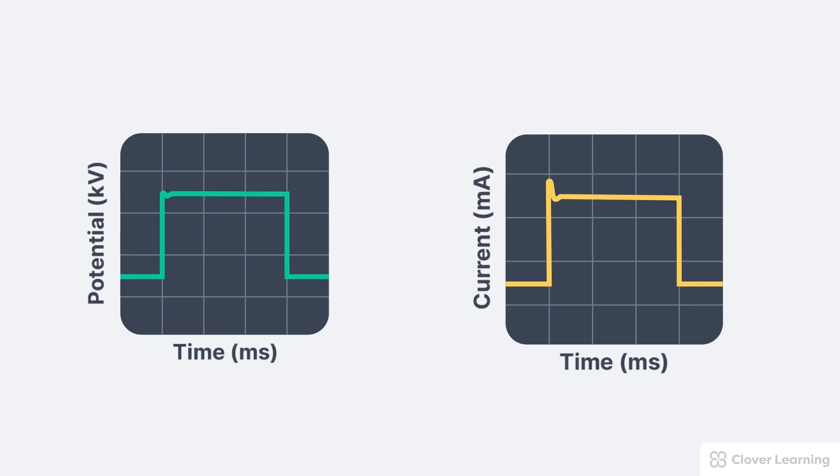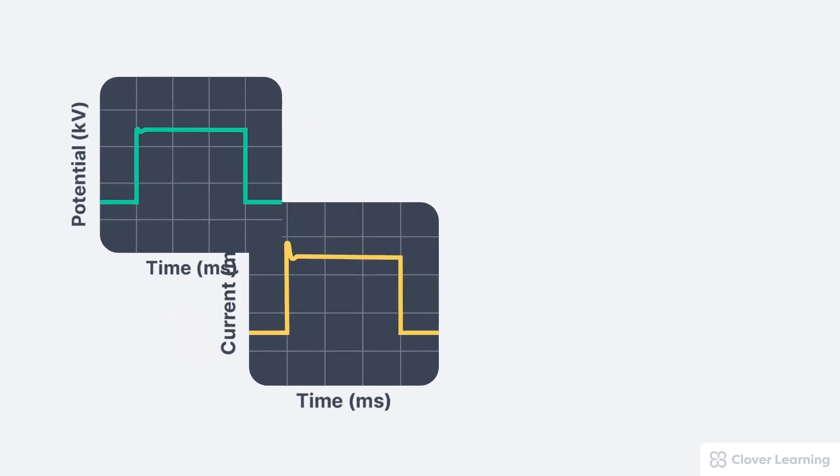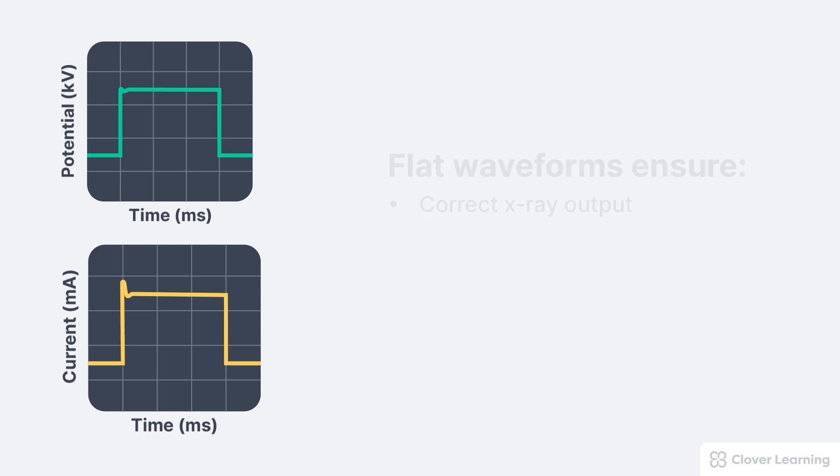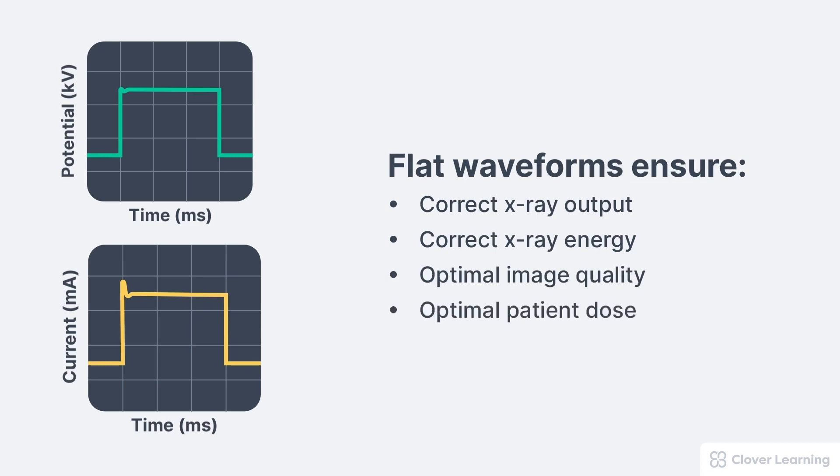When operating correctly, both the KV and MA waveforms should be stable and flat during the entire exposure. This is important to ensure the correct x-ray output, the correct x-ray energy, optimal image quality, and optimal patient dose.